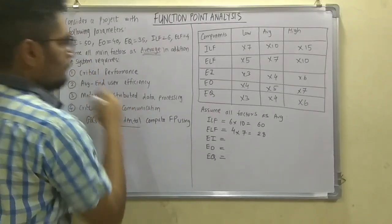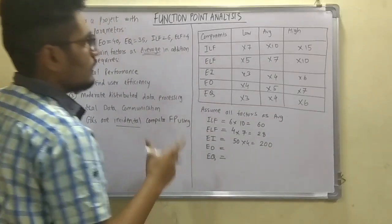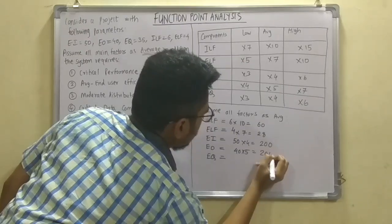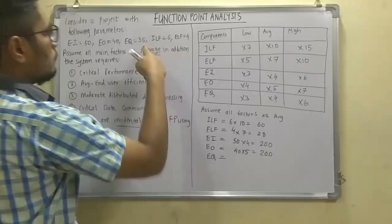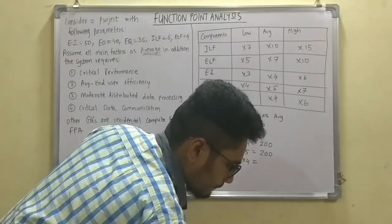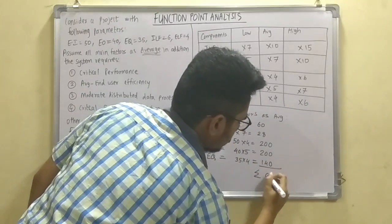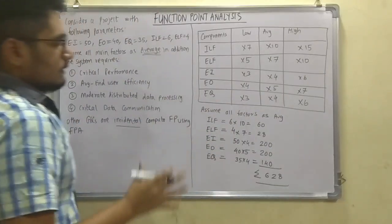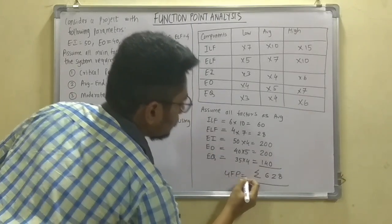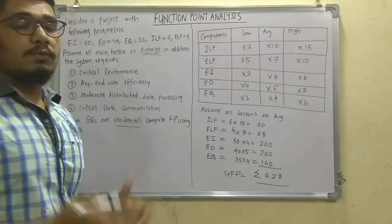EI is given as 50, so 50 into 4, which is 200. EO is 40, so it is again 200. And EQ is 4 into 35, which comes out to be 140. And we have to sum this, everything comes out to be 628. So this we have calculated, the unified function point based upon all the main factors given from the average.